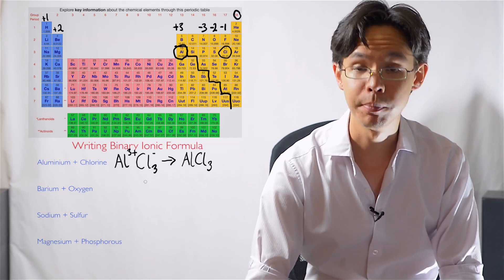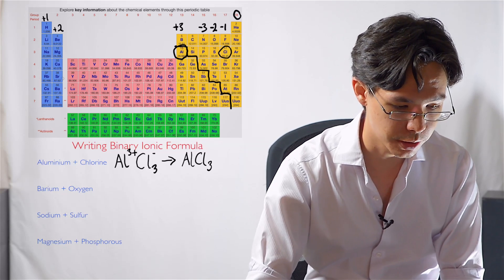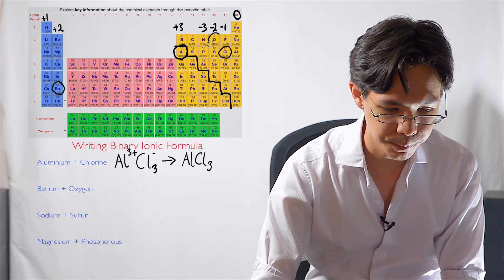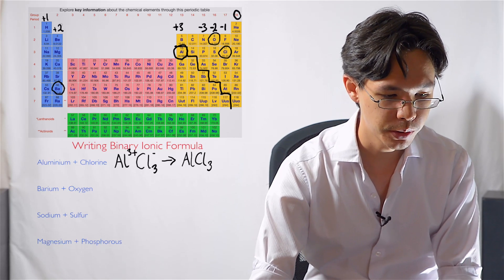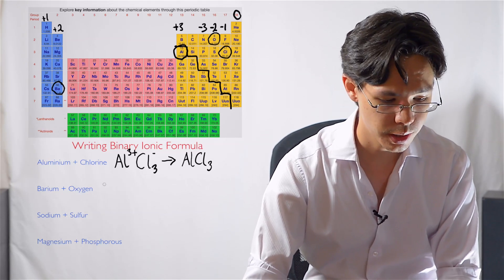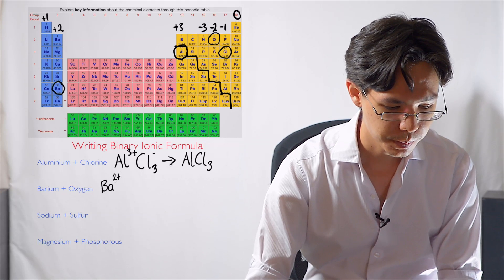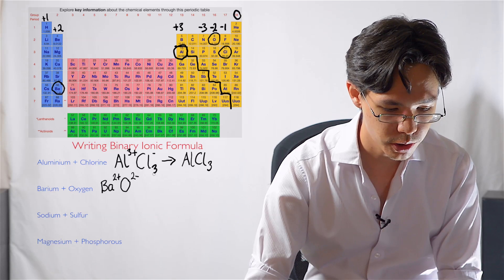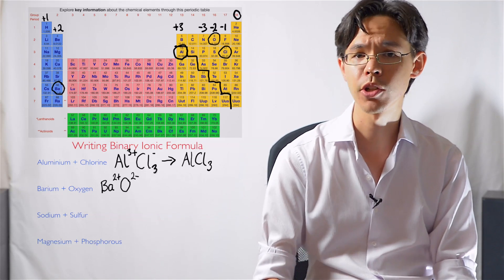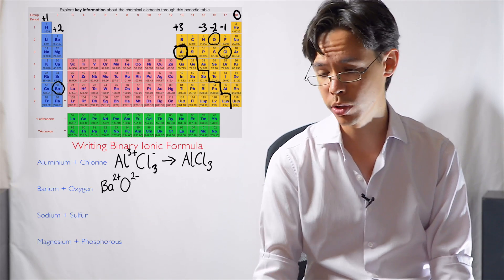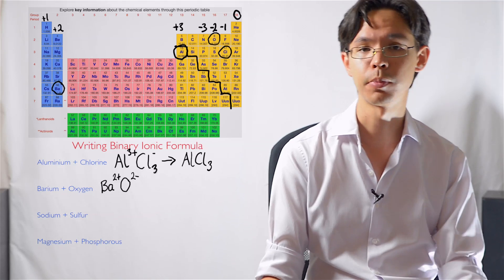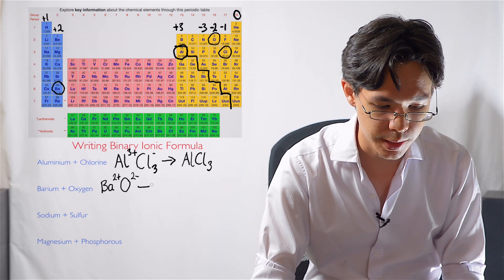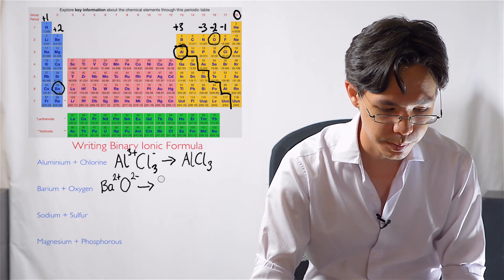Let's go to the next example. We've got barium and oxygen. So if we go looking for barium, barium lives over here in the periodic table. Oxygen lives over here. Barium lives in group two, so it forms a positive two charge. And oxygen over here forms a two negative charge. Let's take a look. Well, it looks like the charges are already balanced. Two negatives balances two positives. So there's nothing more that we need to do with it. We just simply write it as BaO. Barium oxide.